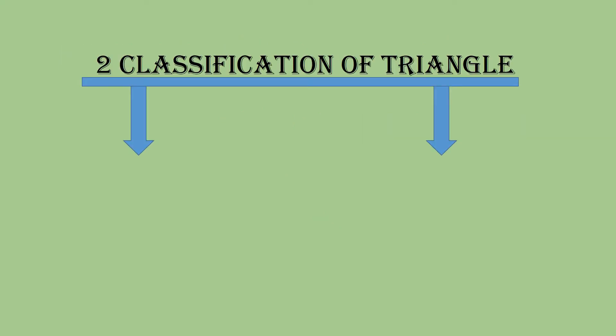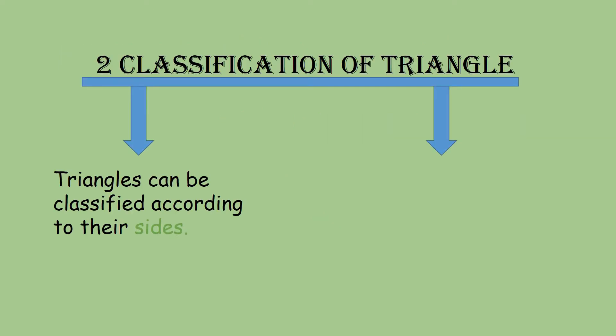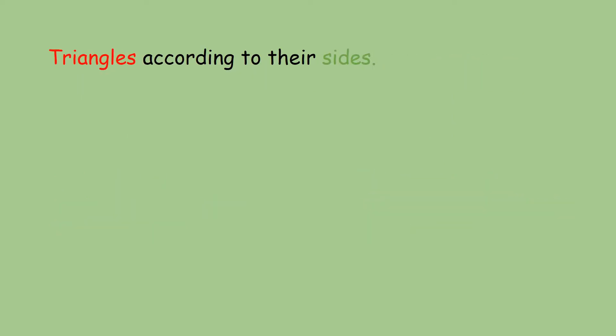There are two classifications of triangles. Triangles can be classified according to their sides. Let us first discuss about triangles according to their sides.